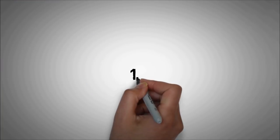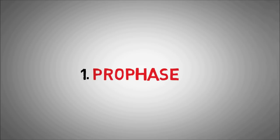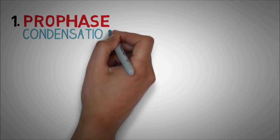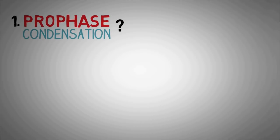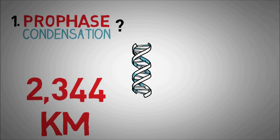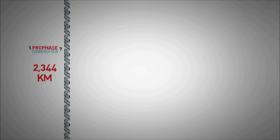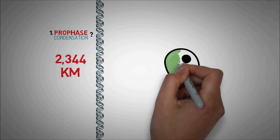So first coming to the prophase. The word that we used for it was condensation. Now what does that mean? Our DNA is very long, like 2,344 kilometers long. Really. So to fit all that in one tiny nucleus is a daunting task.